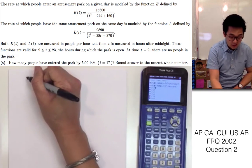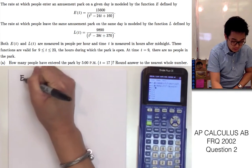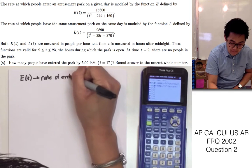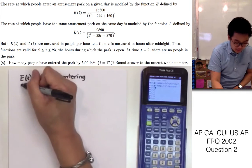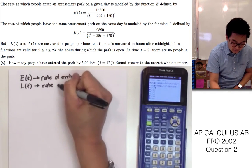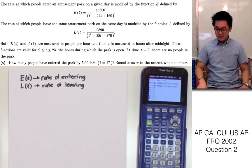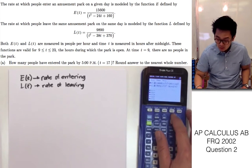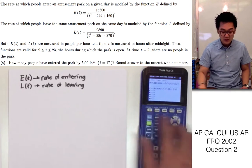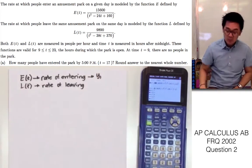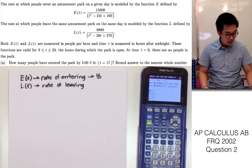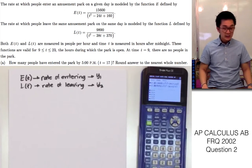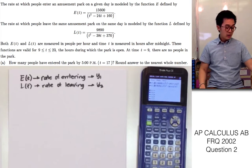We're given the function E of T, which is the rate of entering, and also L of T, which is the rate of people leaving. It's common practice to plug in the given functions into my calculator. In my TI-84 at Y equals, I have already put in Y sub 1, which is my E of T, and Y sub 2, which is the given function from our FRQ and will be my L of T. Now that I have set up my functions in the calculator, I can easily call them when answering problems A through D.